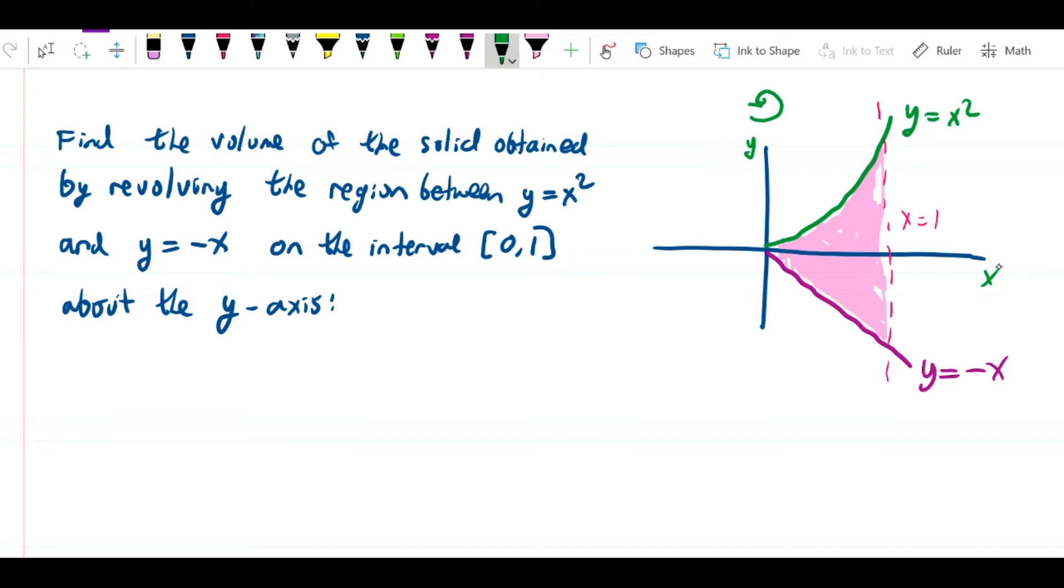So recognize that what we're doing is we're revolving shells that are going to look like this, I'm going to keep drawing in these half shells like this. So what you can see is that the height of the shell is now going to be that, it's going to be the vertical distance between two curves.